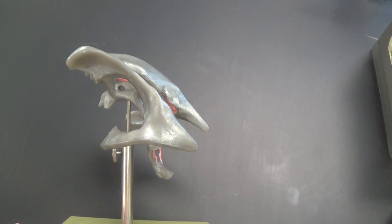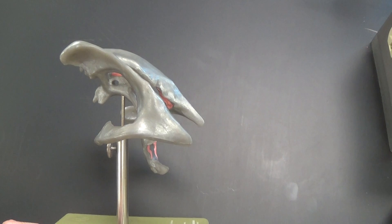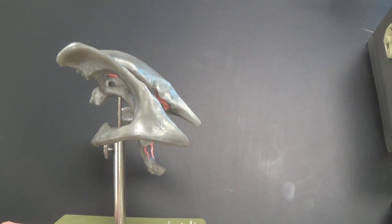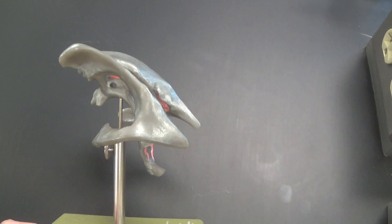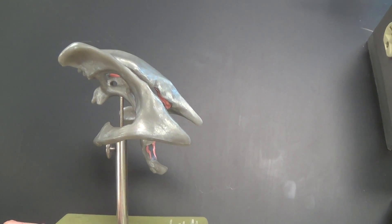This is the ventricle of the brain model. Keep in mind these are not solid organs. These are spaces where you have cerebral spinal fluid. So they are hollow spaces in the brain.